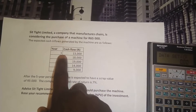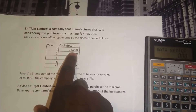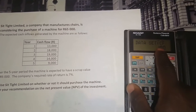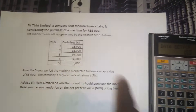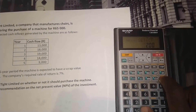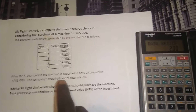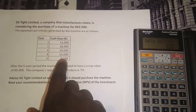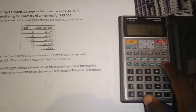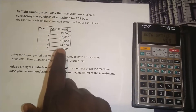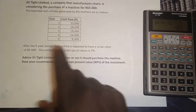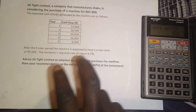Moving on, the cash flows from year one to year five are as follows. Year one: 13,000 rand — plug in 13,000 and press Enter; it shows cash flow at year one. Year two: 18,000 — plug in 18,000 and press Enter. Year three: 19,000 — enter 19,000 and press Enter. Year four: 14,000 — enter 14,000 and press Enter. At year five we have 9,000, but we must pay careful attention: we're told the machine has a scrap value of 5,000 rand after the five-year period.